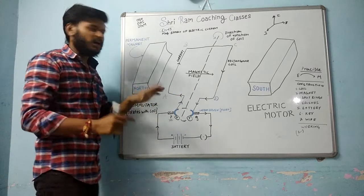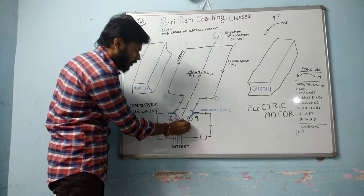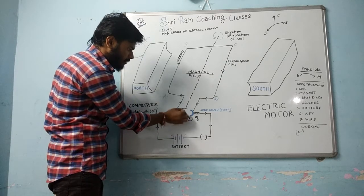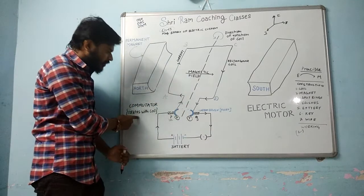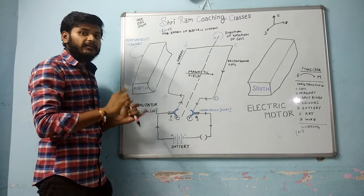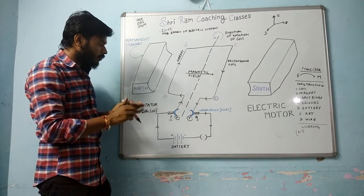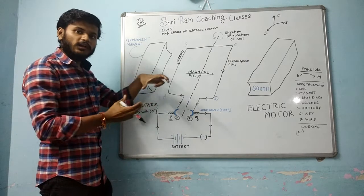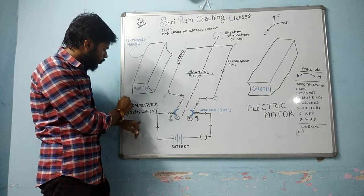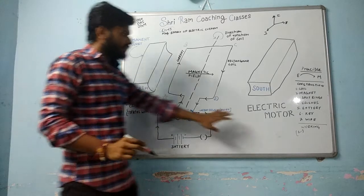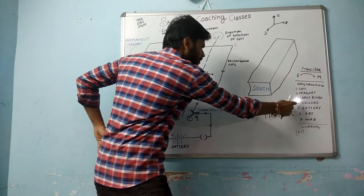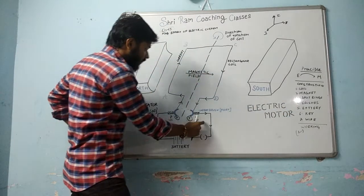The commutator, or split ring, has an important function: to reverse the current. It's very important. The brushes are fixed with the wire.